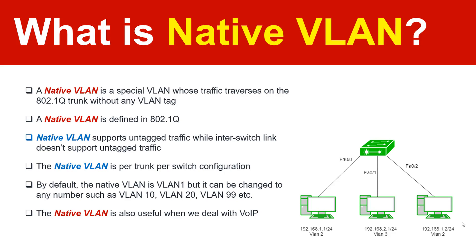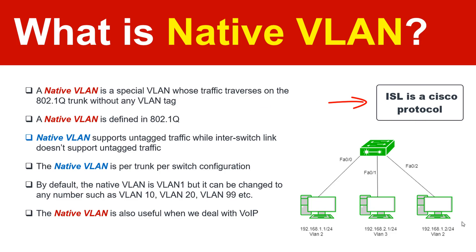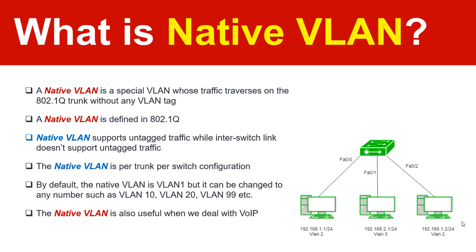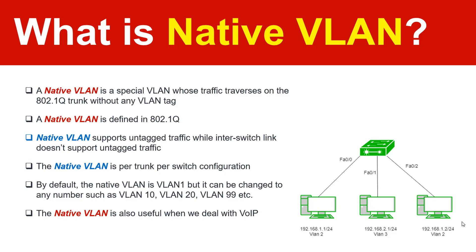Native VLAN is defined by 802.1Q. It supports untagged traffic on inter-switch links, while ISL does not support untagged traffic. ISL is a Cisco proprietary protocol, while native VLAN is based on 802.1Q, which is an open standard protocol. Native VLAN is configured per trunk, per switch.